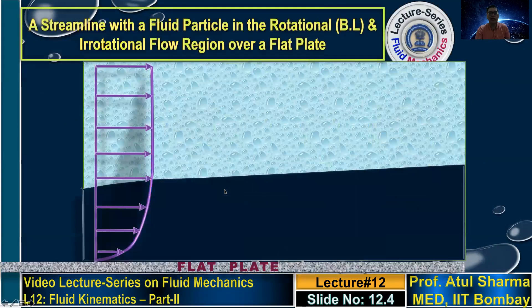To begin with, let us take an example: flow across a horizontal flat plate. The fluid is moving above the flat plate with a constant velocity, which we denote as u-infinity. This plate is stationary, so the fluid in contact with the plate must also be stationary due to the no-slip condition. Gradually, due to viscosity, the upper layer tries to move, creating a viscous resistance between different layers of the fluid, resulting in a velocity profile.